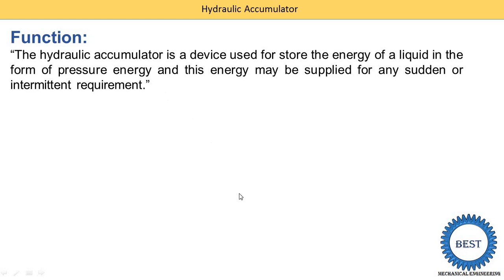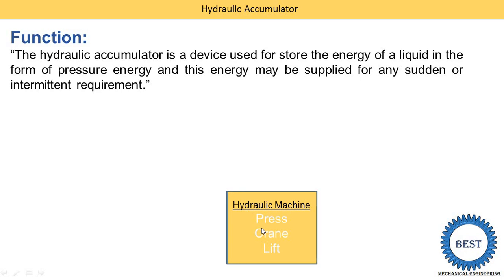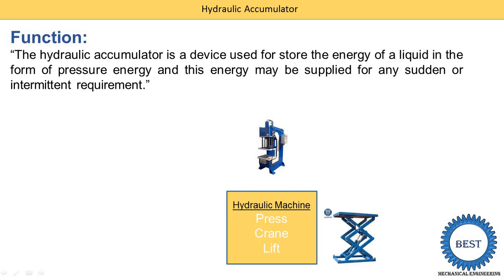This hydraulic accumulator is used with different hydraulic machines like the hydraulic press, hydraulic crane, and hydraulic lift. These types of devices move either in the upper direction or downward direction. When this device is moving in the upper direction, and when it is moving in the downward direction, different things happen.